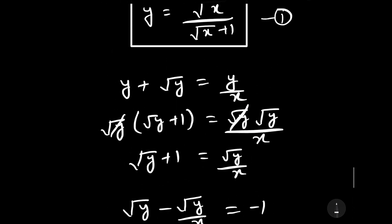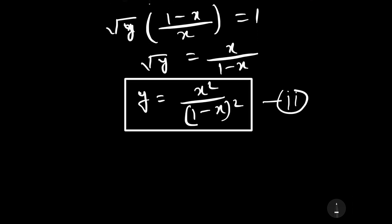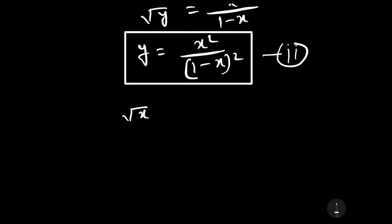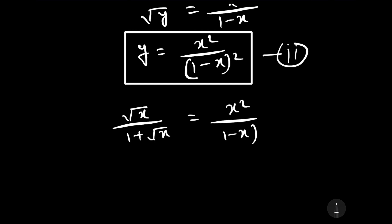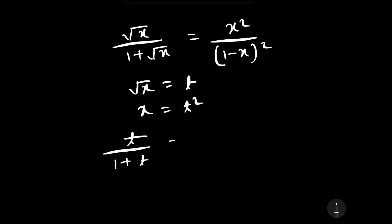Equating both expressions for y: √x / (1 + √x) equals x² / (1 − x)². Now let √x equal t, so x equals t². Substituting, t / (1 + t) equals t⁴ / (1 − t²)².